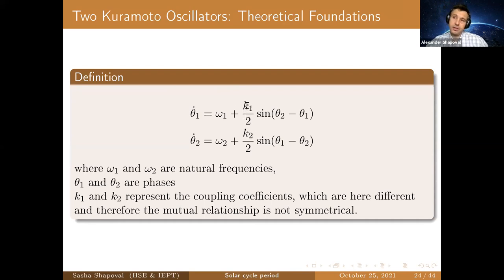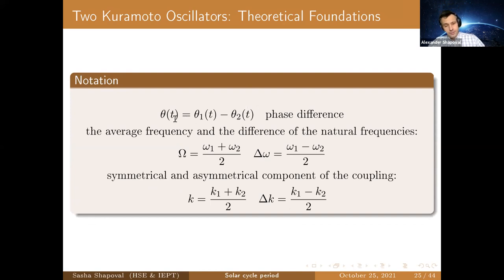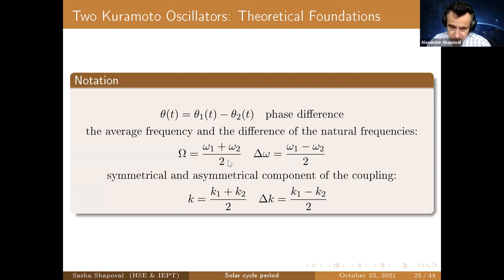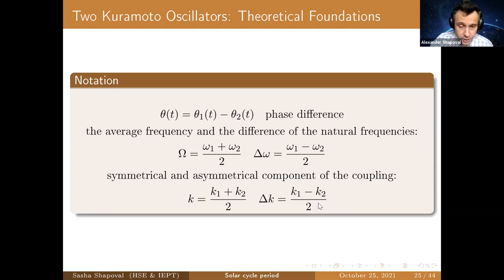We are going to consider the model with different k1 and k2, so oscillators influence each other non-symmetrically. For notation, we use the phase difference called theta and introduce the average natural frequency — half the sum of natural frequencies — and delta-omega, which is half the difference. Similarly, we introduce symmetrical and asymmetrical components of the coupling k and delta-k as the half-sum and half-difference of the coupling coefficients. This notation has a clear physical meaning.